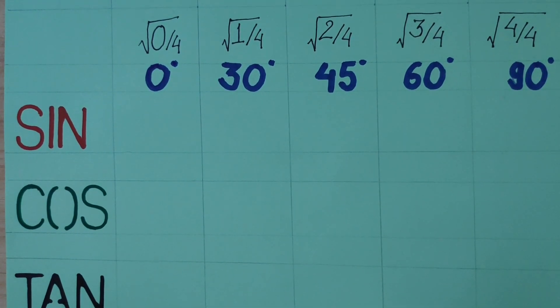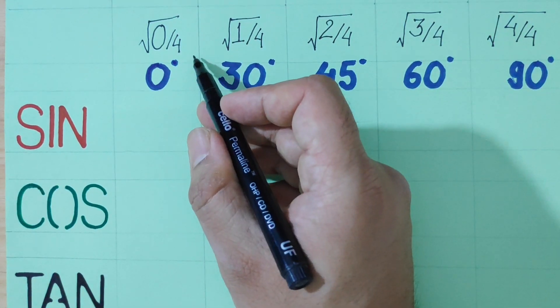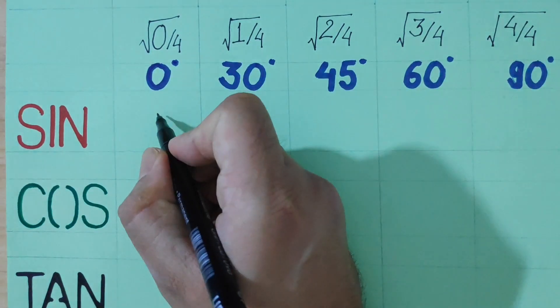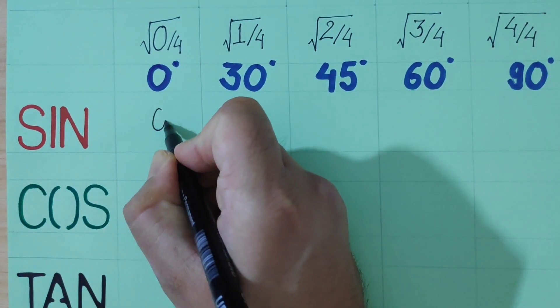Let's simplify. 0 over 4 is 0, so square root of 0 is 0. So sin 0 is 0.